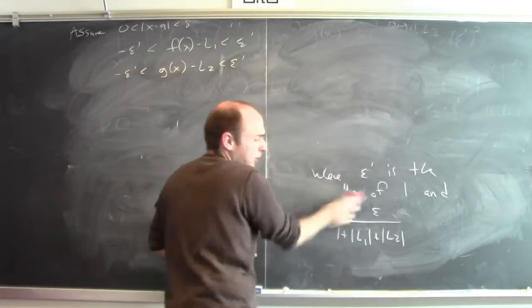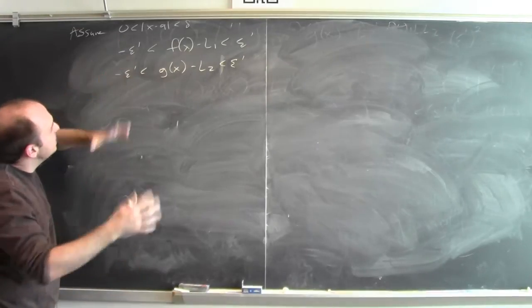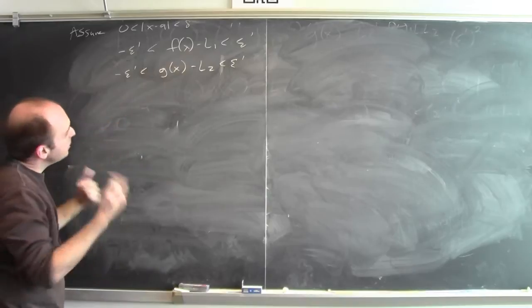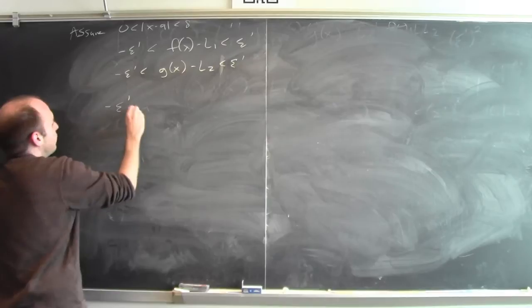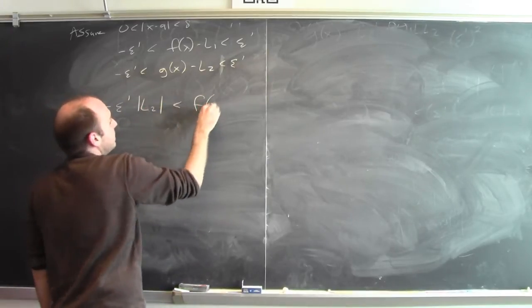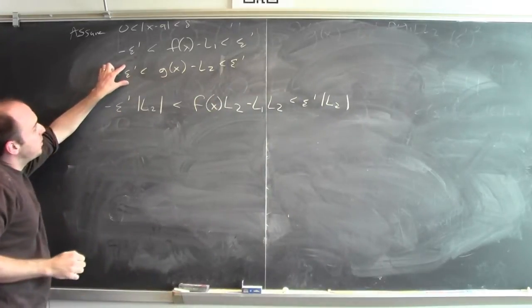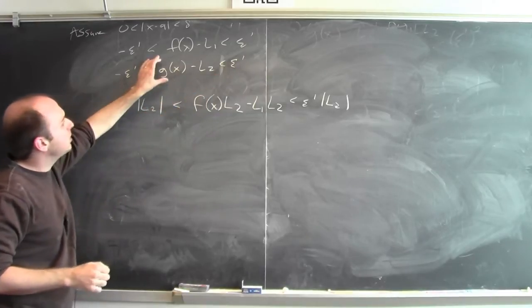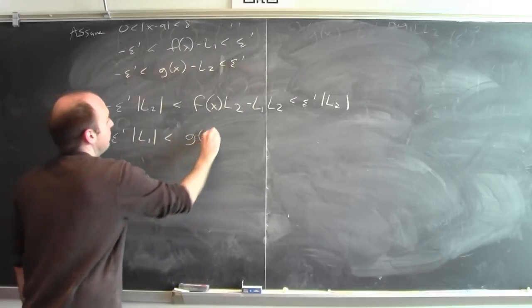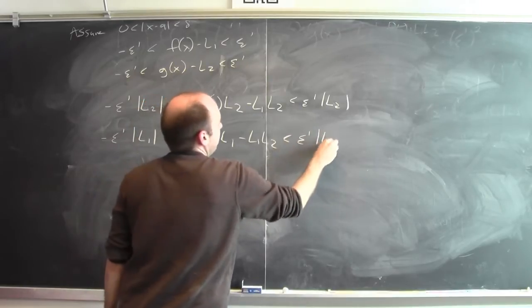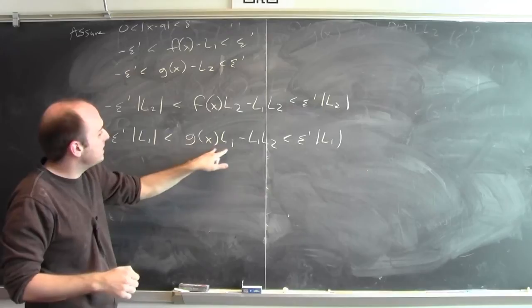We have to remember what epsilon prime is, because that will be important later. Taking the first inequality and multiplying by l2 (with absolute values in appropriate places), I get: −epsilon prime·|l2| < f(x)·l2 − l1·l2 < epsilon prime·|l2|. Doing the same to the second inequality, multiplying by l1: −epsilon prime·|l1| < g(x)·l1 − l1·l2 < epsilon prime·|l1|. This tells me I can get f(x)·l2 close to l1·l2 and g(x)·l1 close to l1·l2, but that's not quite what I need — I need f(x)·g(x) close to l1·l2.